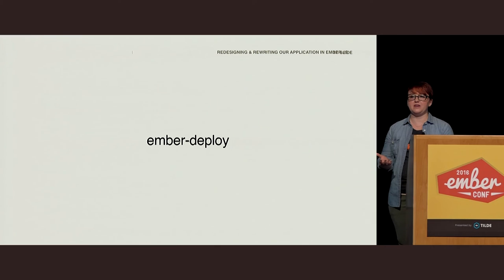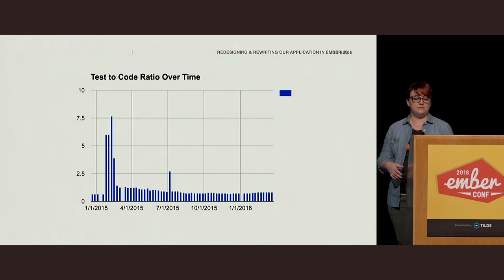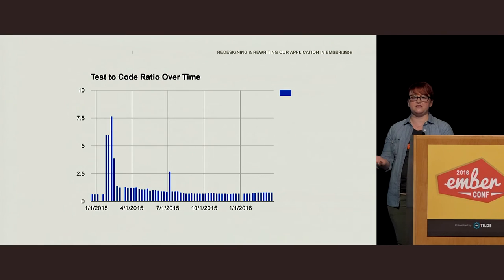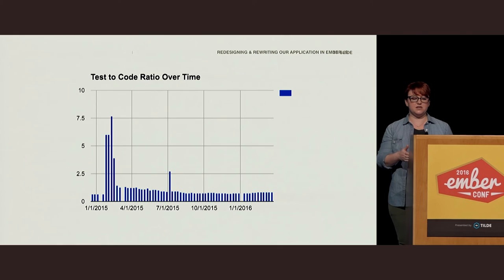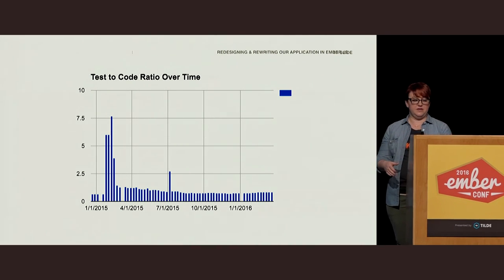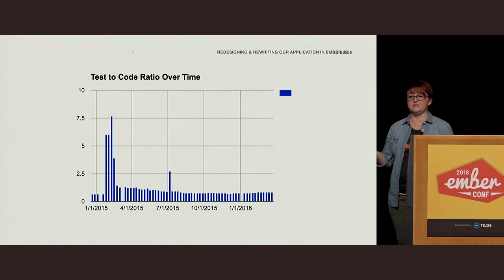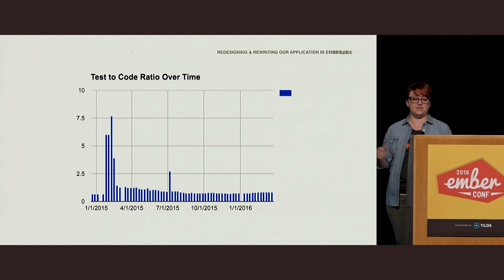Another metric and a major improvement is our test coverage. I wrote a script that compared lines of code in our app directory to lines of code in our test directory, and this is a graph of that work week by week throughout the process. It's a pretty dramatic increase over our past test coverage — one, because it's greater than zero, and two, because we have at least a one-to-one ratio of test-to-code at any given time.